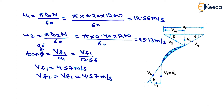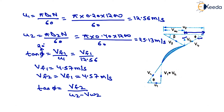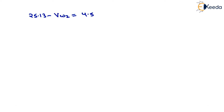From the outlet velocity triangle shown here, tan(phi) equals vf2 divided by (u2 minus vw2), where vf2 is the perpendicular and (u2 minus vw2) is the base. Substituting values: 25.13 minus vw2 equals 4.57 divided by tan(30 degrees). After solving, vw2 equals 17.215 meters per second.